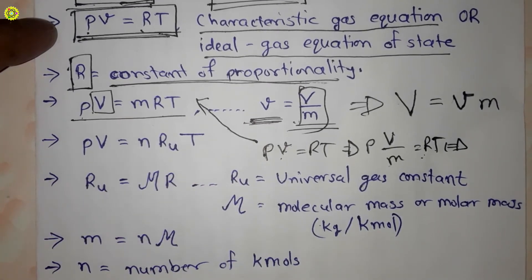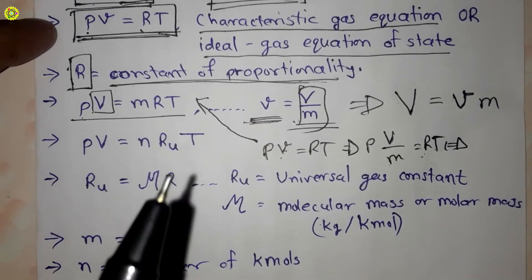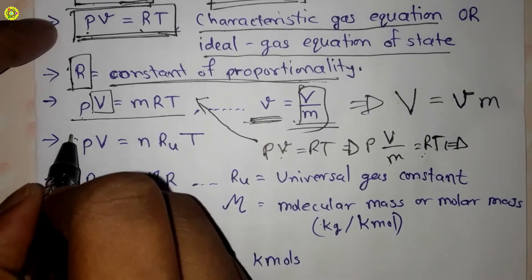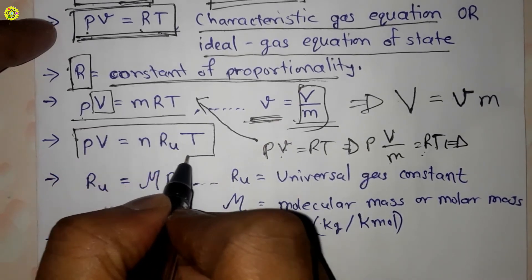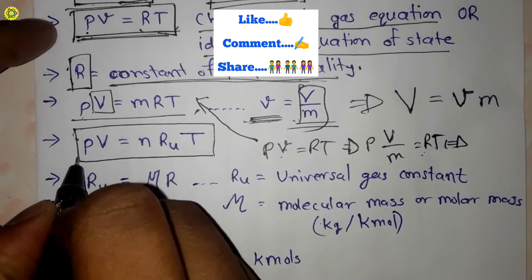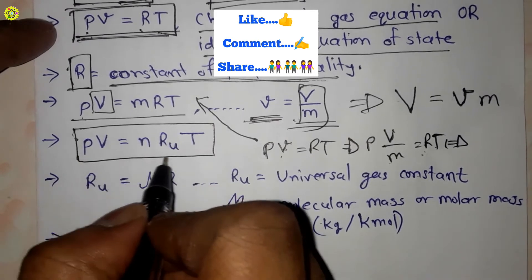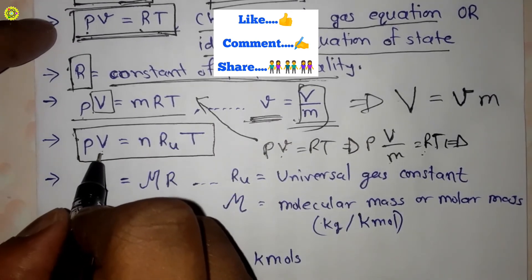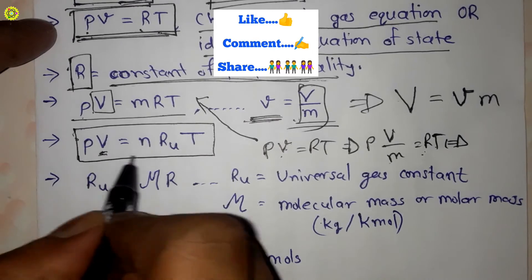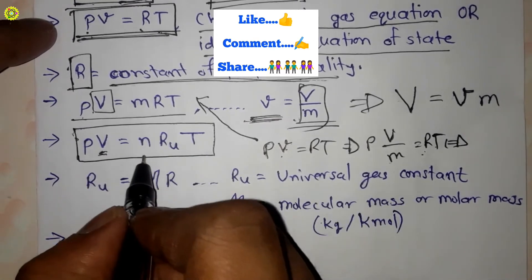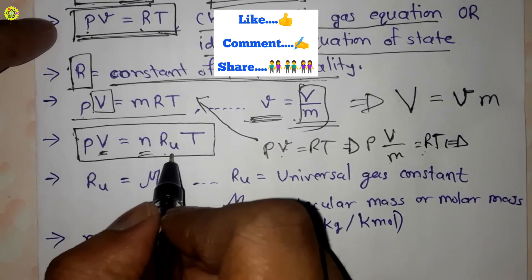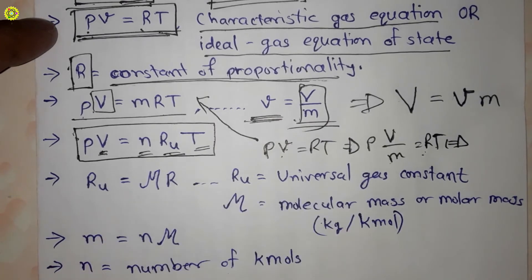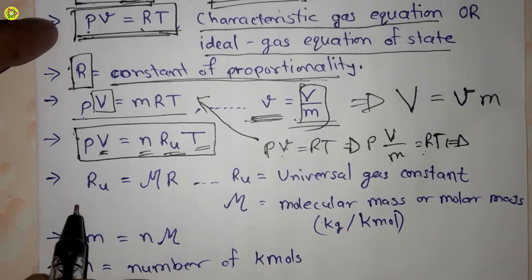The characteristic gas equation can further be written as PV = nRuT, where V is again the total volume, n is the number of moles, and Ru is the universal gas constant.